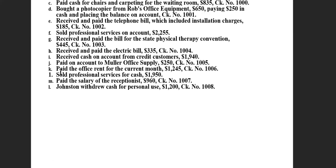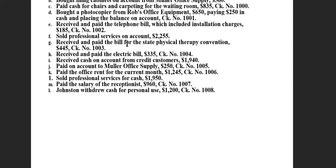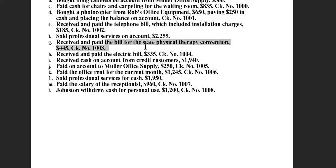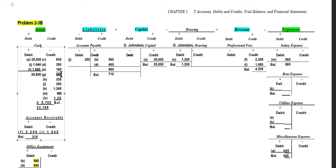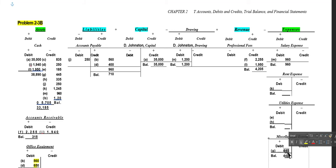Then we received and paid the bill for the state physical therapy convention, $445. Our asset cash goes down by $445 — we credit cash for $445 because it is an asset being decreased. We record an expense; since we don't anticipate many expenses of that type, we put it in miscellaneous expense. We debit miscellaneous expense $445 to increase that expense account.